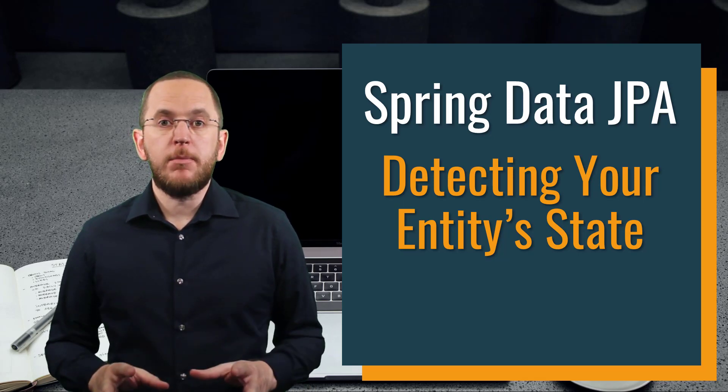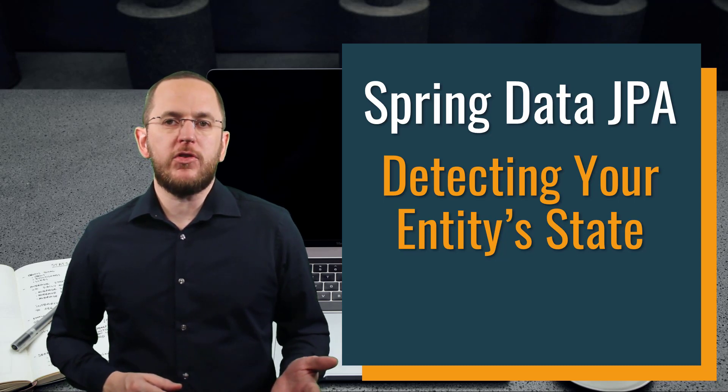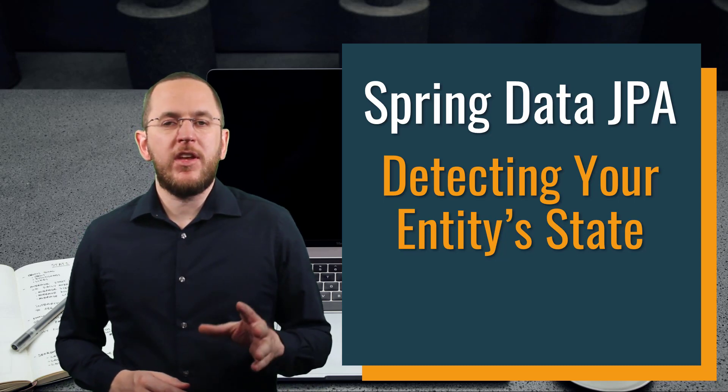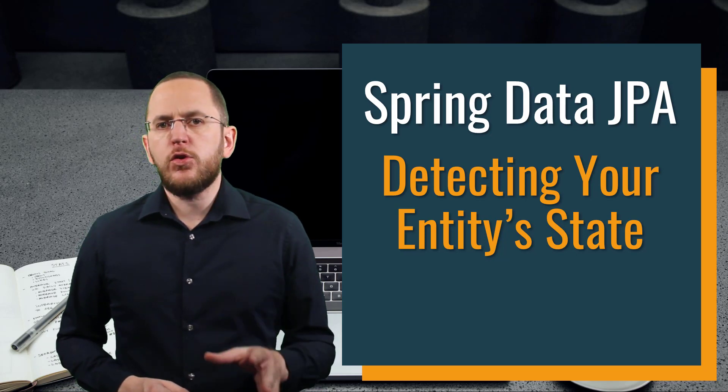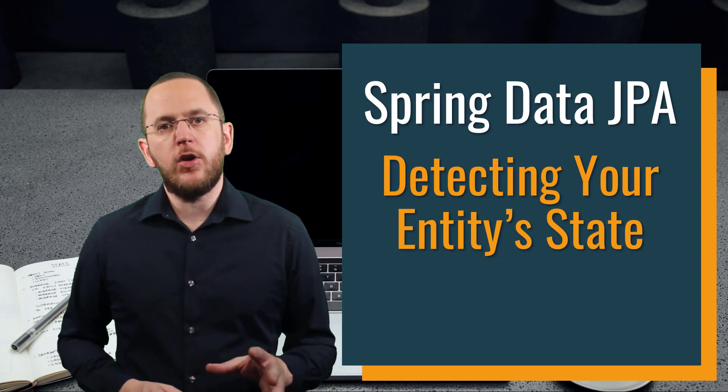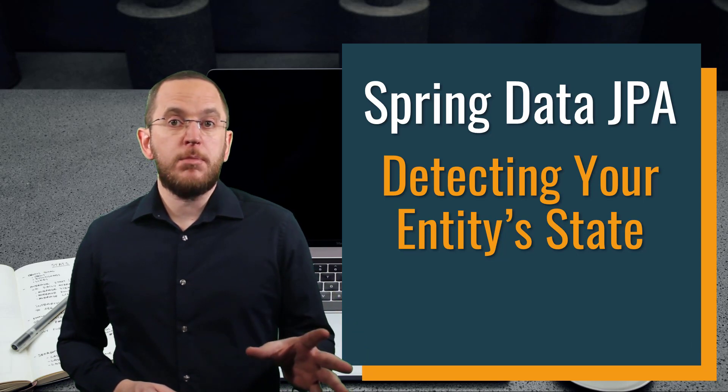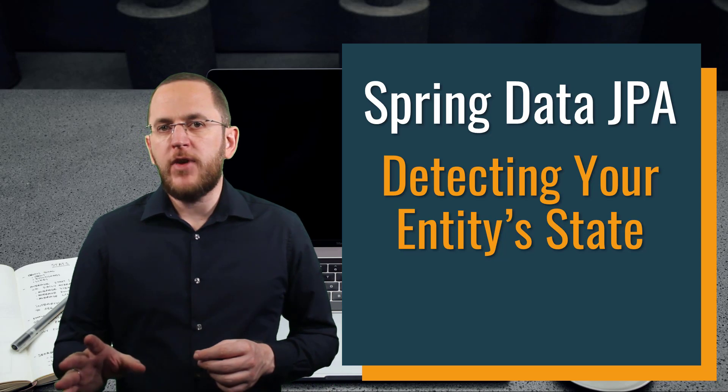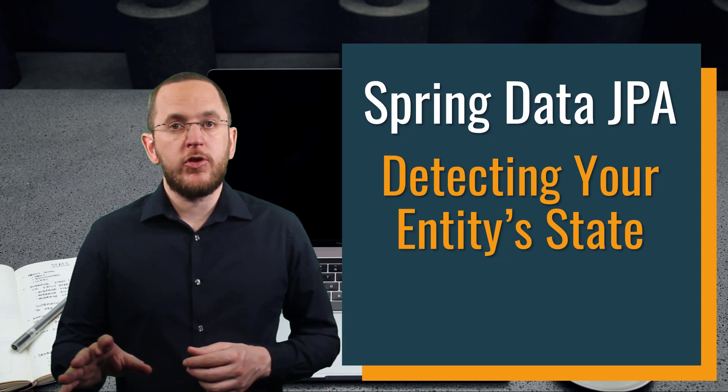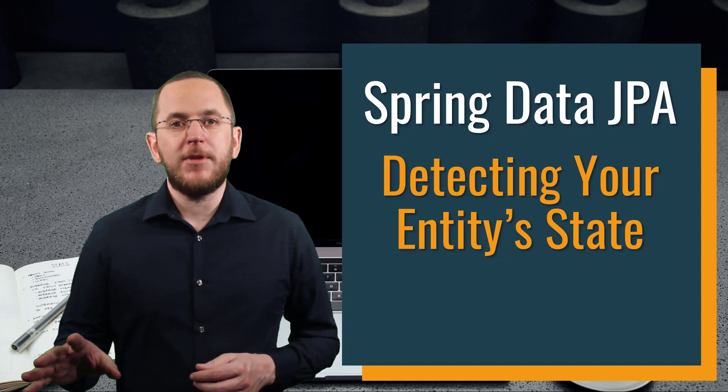Spring Data JPA's repositories provide many methods that implement the standard operations you need to create a basic persistence layer. One of them is the save method, which the CRUD repository defines. When you call this method, it depends on the entity object state, which database operation Spring Data JPA performs. Spring Data JPA stores a new record in the database if you call the method with a new entity object, and if you provide an object that has already been persisted in the database, Spring Data JPA executes an SQL update statement instead.